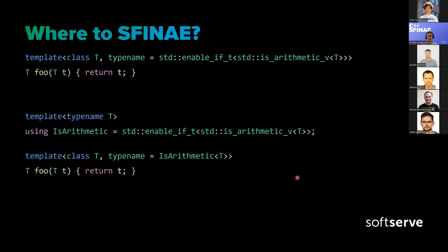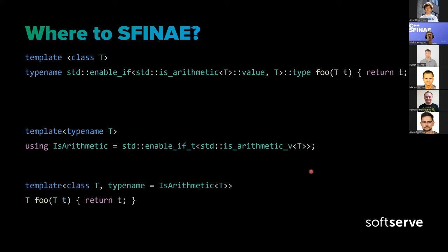Here's an example showing the progression. We started with return parameter enable_if with ::value and ::type verbosity, and we finished with just: template<class T, typename = std::enable_if_t<std::is_arithmetic_v<T>>> T foo(T t). In my opinion it's like two completely different things — it does the same thing but looks very different. The last example is much more reasonable and developer-friendly.